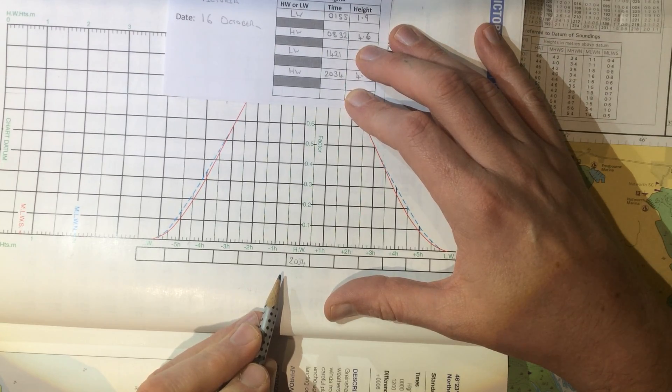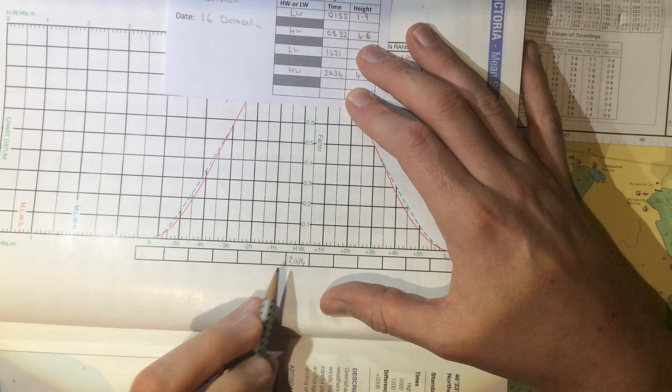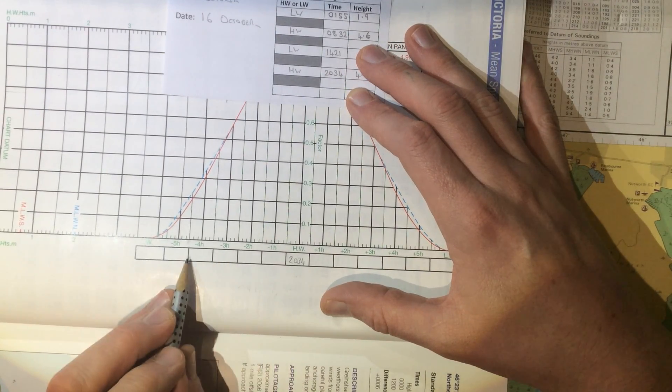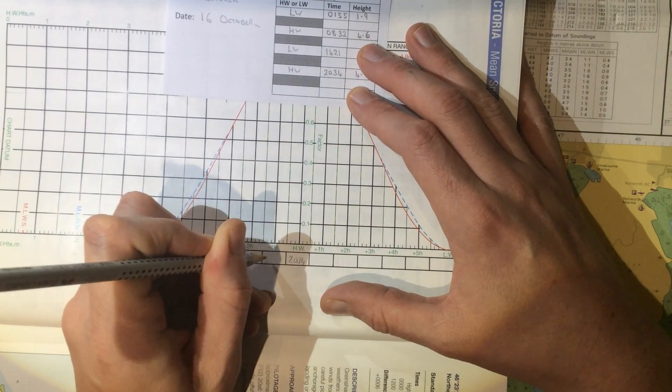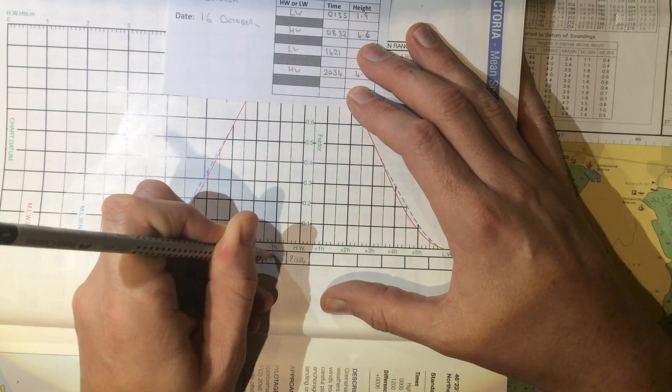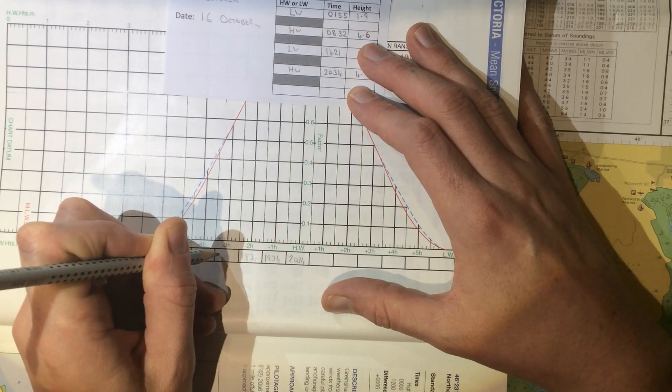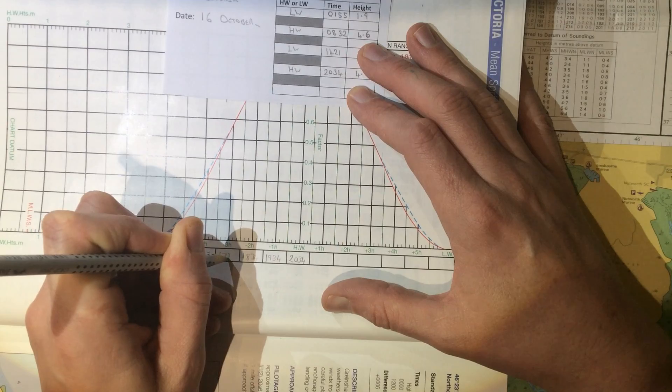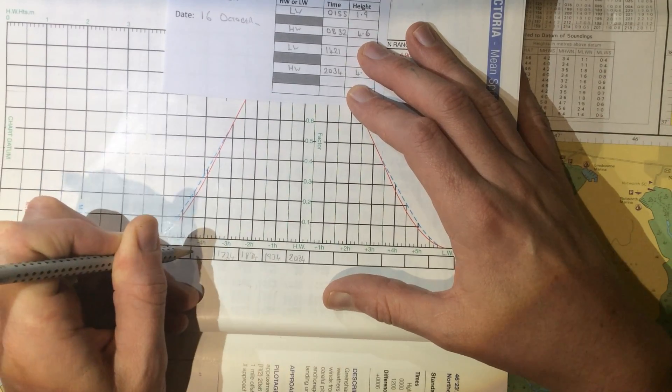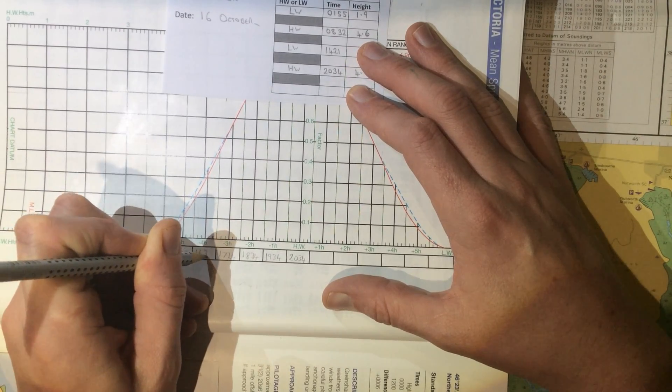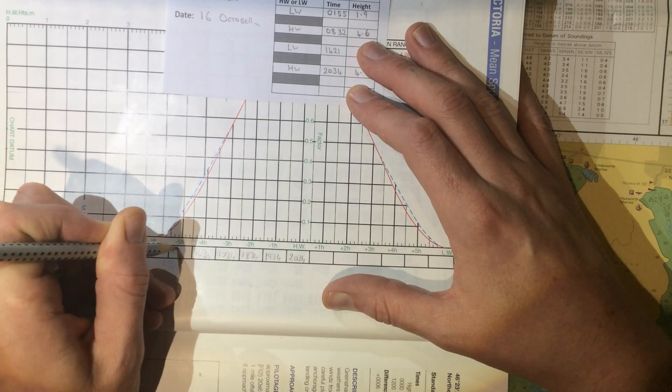And as we're interested in the time before that, late afternoon, we can go back one hour at a time in each of these boxes. So 19:34, 18:34, 17:34 and 16:34 and so on.